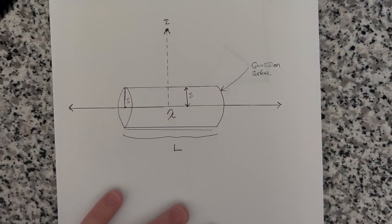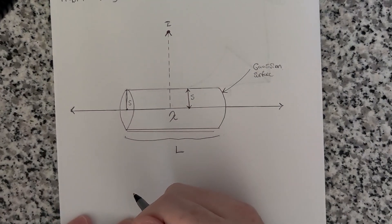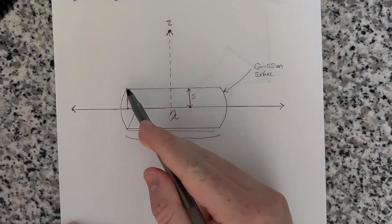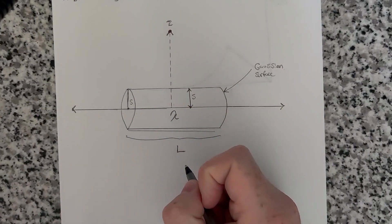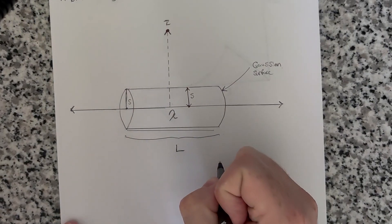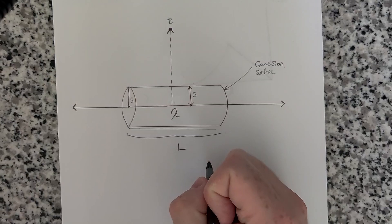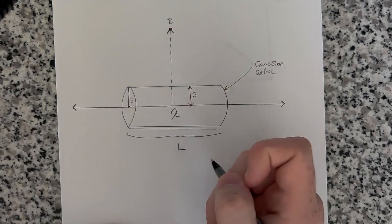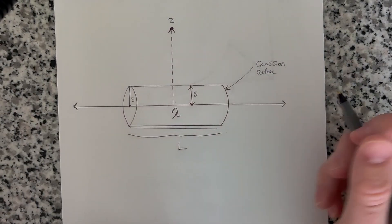And so we're going to use Gauss's Law to find the electric field due to this wire, which we've already done this problem actually before. However, we did this using just straight direct integration. And you'll see with Gauss's Law it becomes a very simple problem.